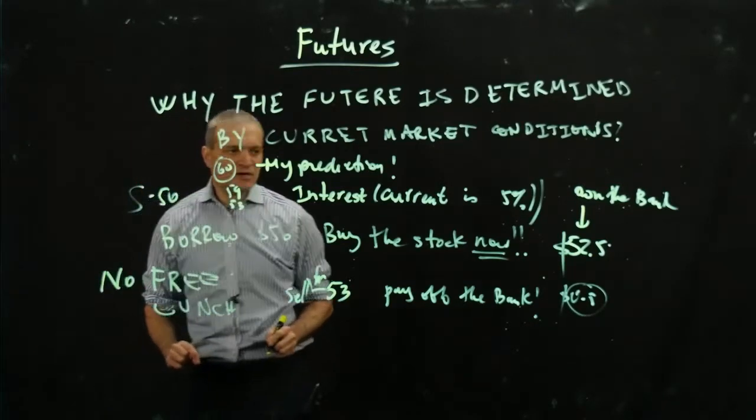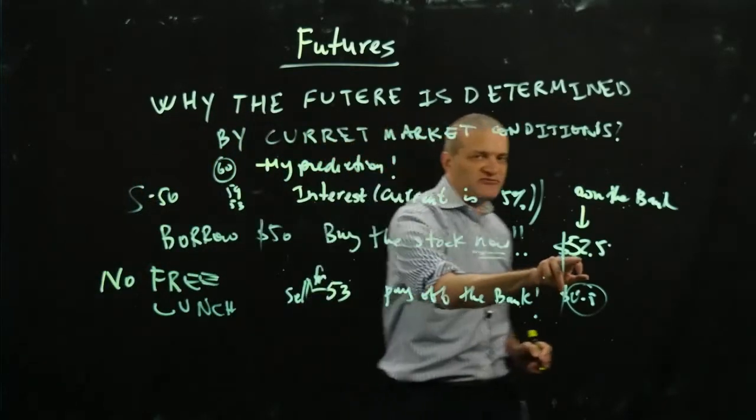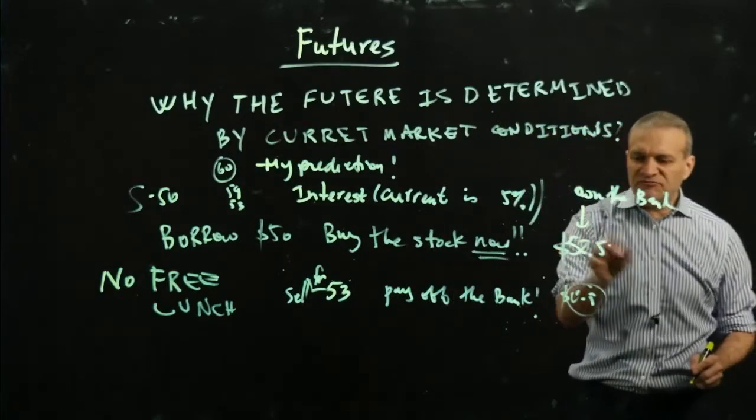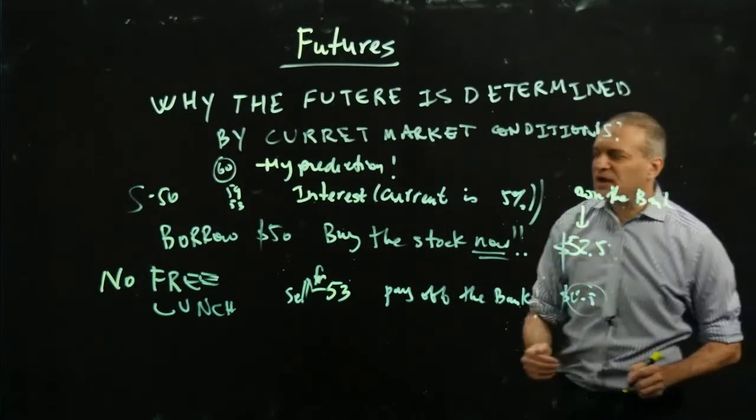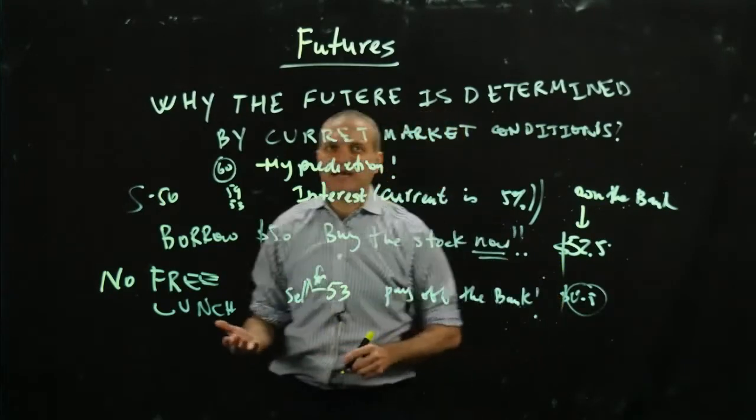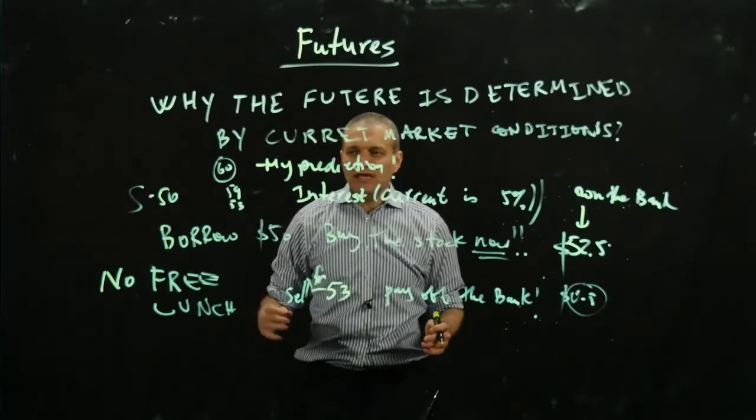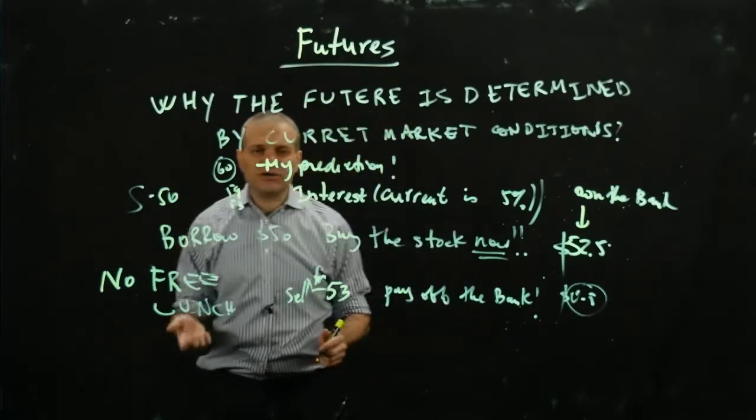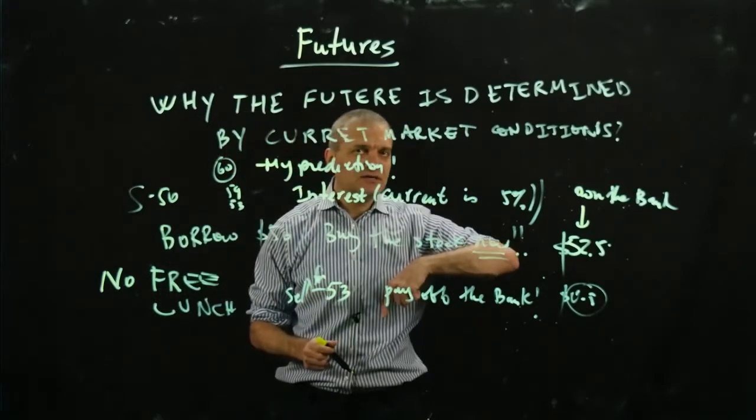No free lunch. So the $52.5 is a price where it's like the minimum price in which I'm a seller will not make money. Lo and behold, the same argument, but vice versa. Instead of buying a stock today and then selling it a year from now, I can actually, from a buyer's perspective of a futures contract, I can actually short the stock and do the same argument.